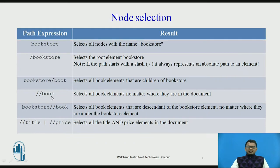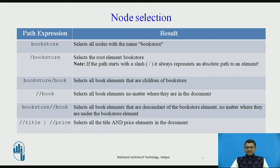This is the example of node selection. If we write double slash title separated with a pipe followed by double slash price, it selects all the title and price elements in the document together.